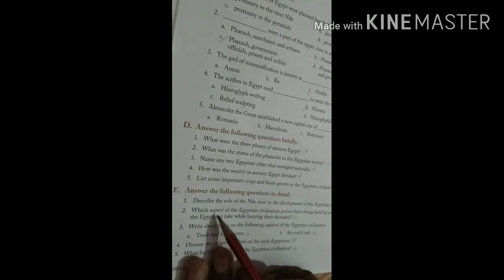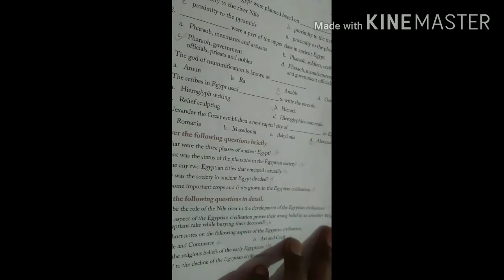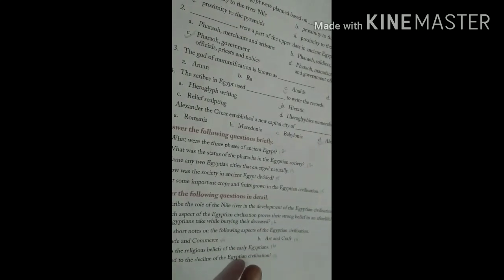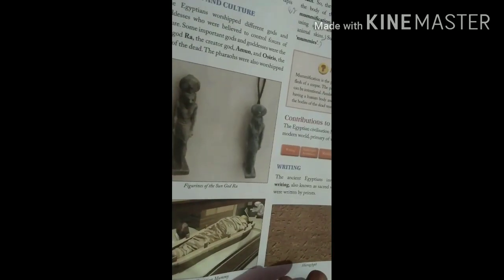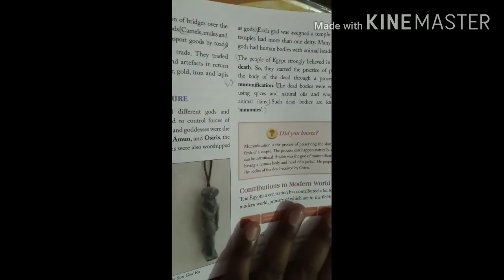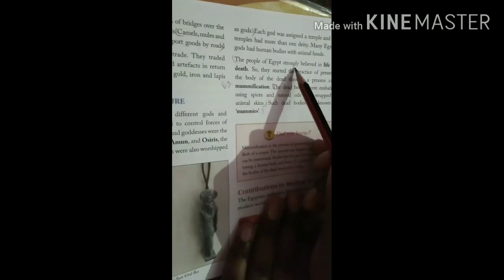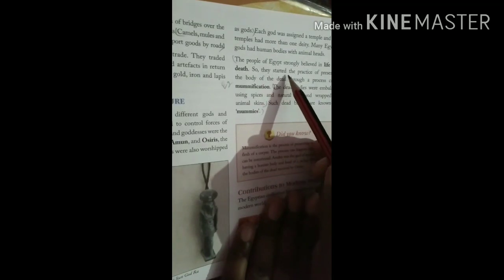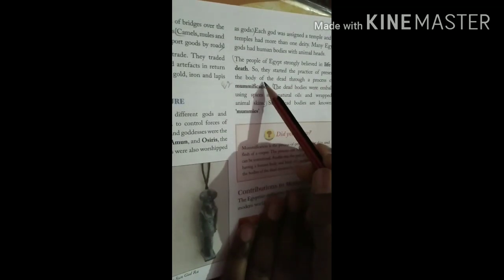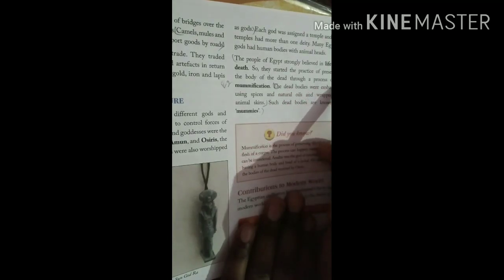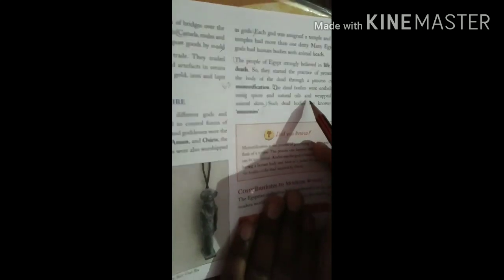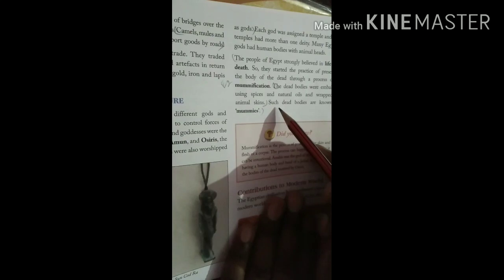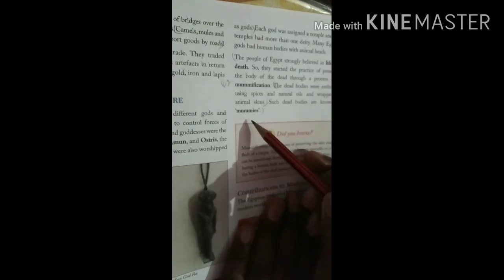Question number two: Which aspect of the Egyptian Civilization proves their strong belief in an afterlife? What steps did the Egyptians take while preparing their deceased? This is on page number sixteen. The people of Egypt strongly believed in life after death, so they started the practice of preserving the body of the dead through a process called mummification. The dead bodies were embalmed using spices and natural oils and wrapped in animal skins. Such dead bodies are known as mummies.